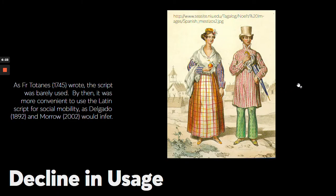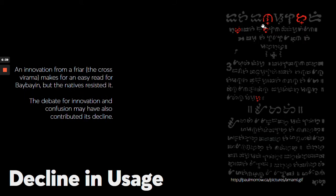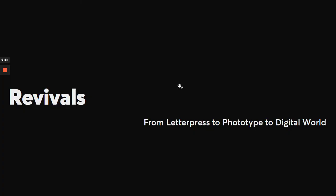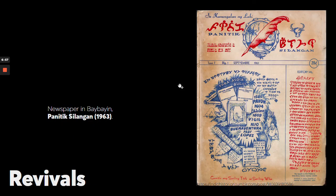The script looked like it had a bright future, but unfortunately due to social mobility, the locals decided to learn Latin script instead of their own. Another reason for the decline was debate on the innovations placed in the script. All hope is not lost, since a few people took a decision to publish a magazine in Baybayin script, like Panitek Silangan.